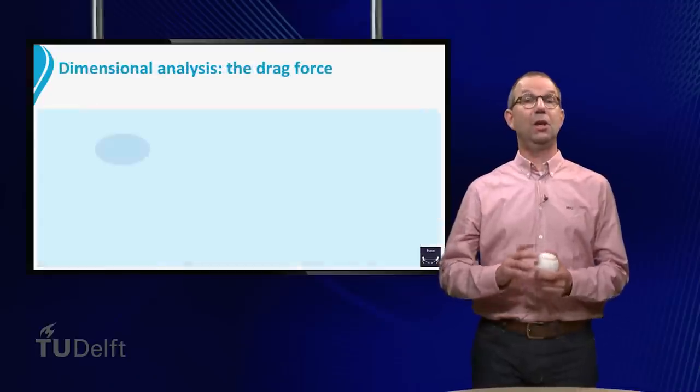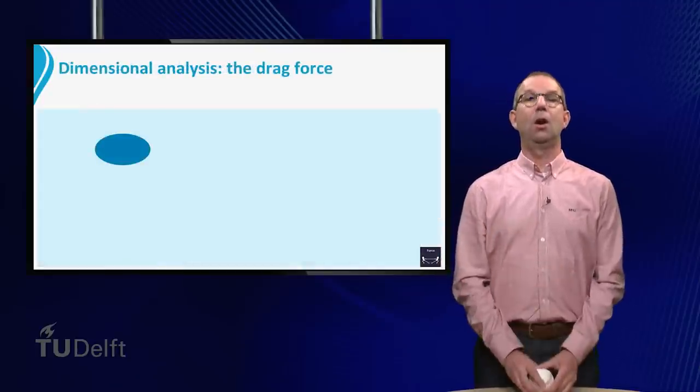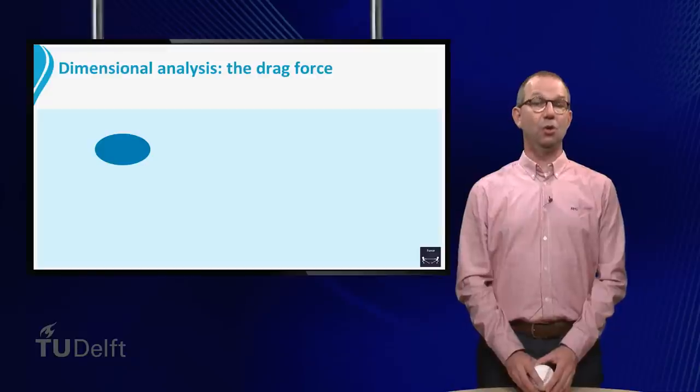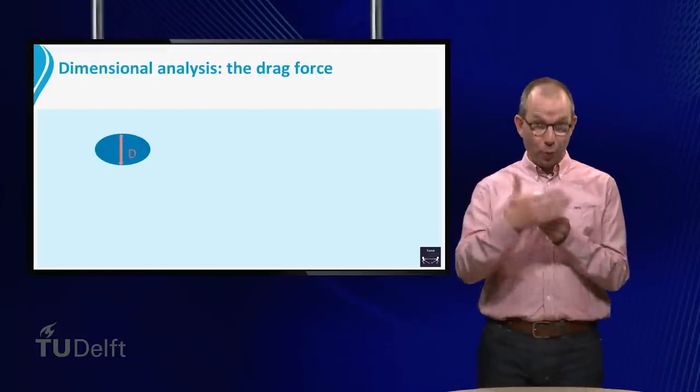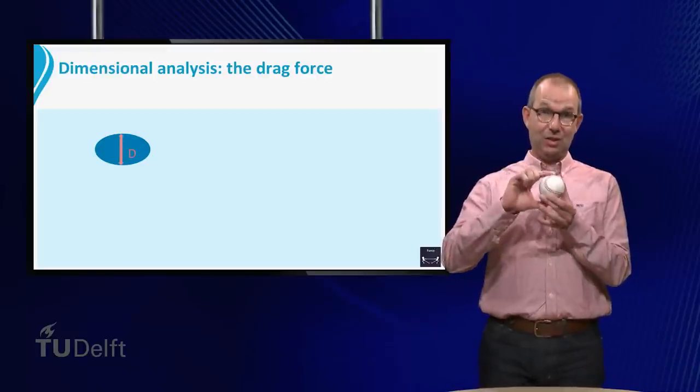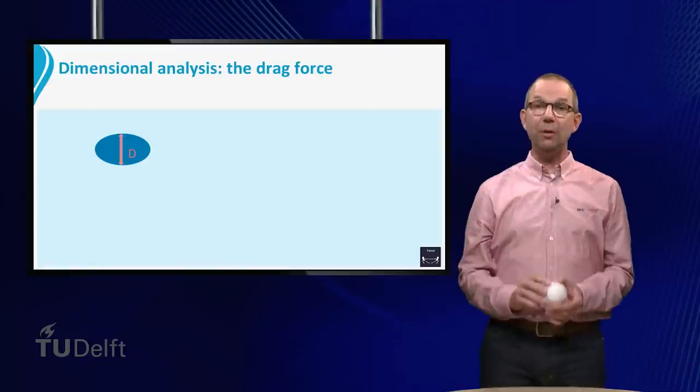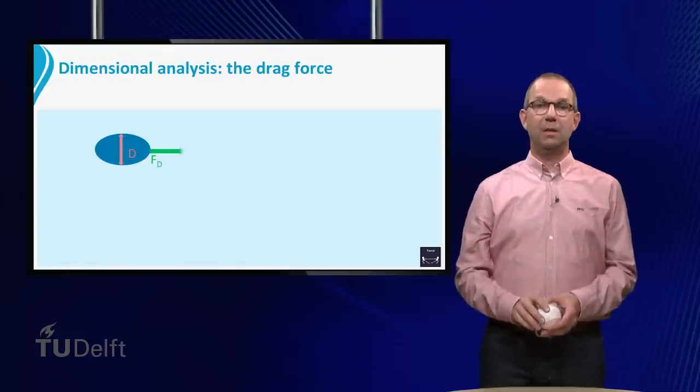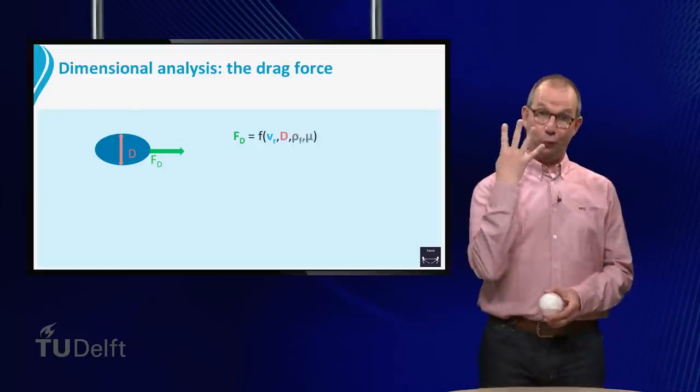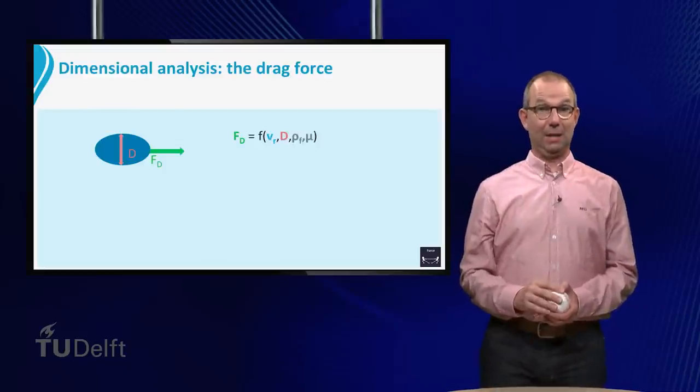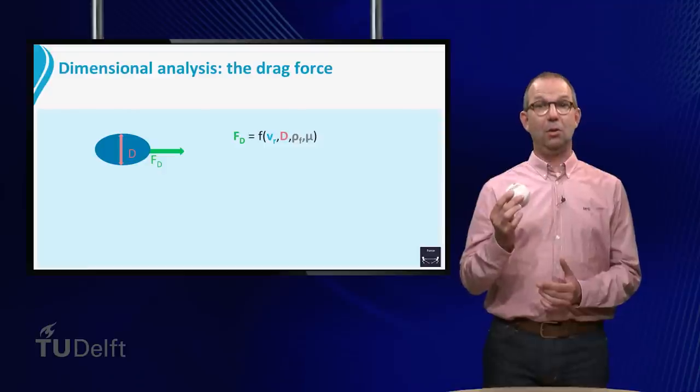To find this answer, we will use dimensional analysis. For simplicity, we will assume that we can describe the frontal area with a length d. You may think of this as the diameter. On the previous slide, we saw that the drag force depends on four parameters. Again, diameter of the object d,